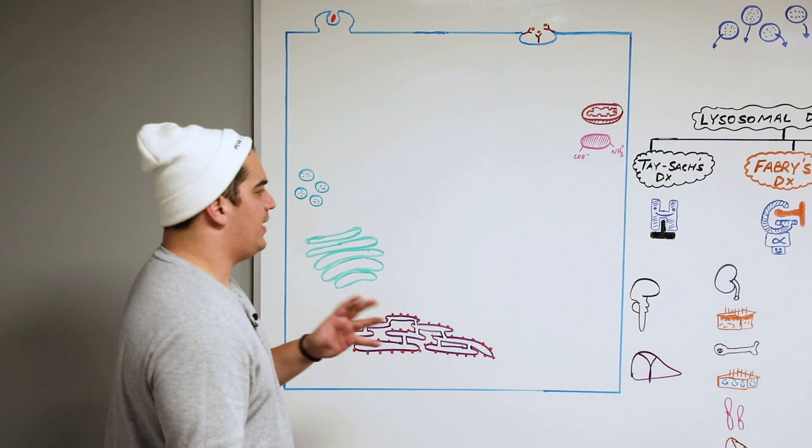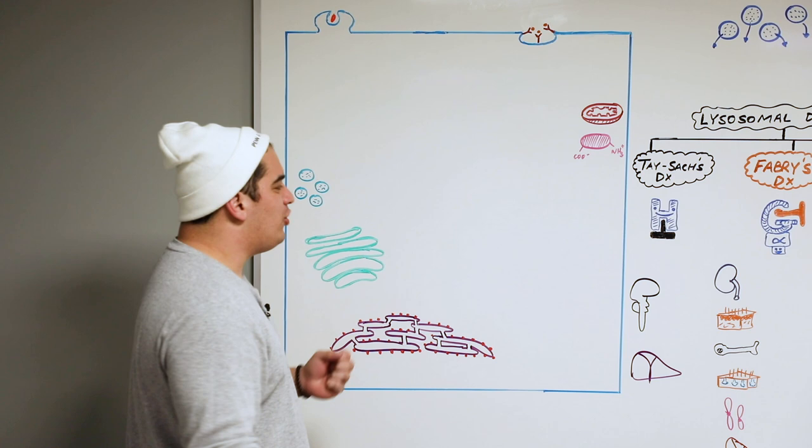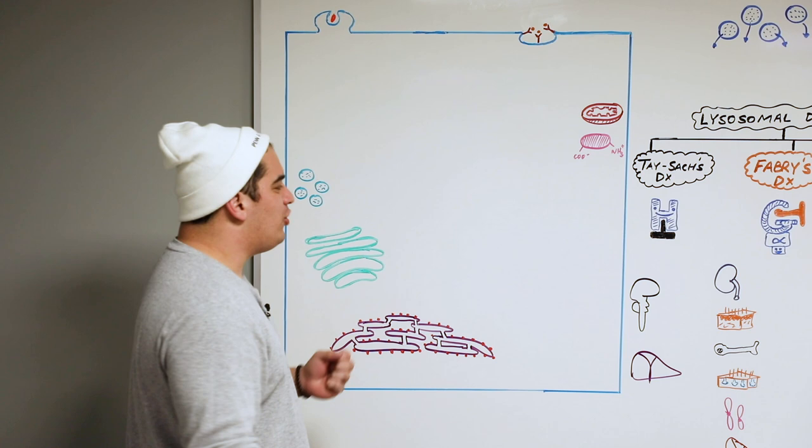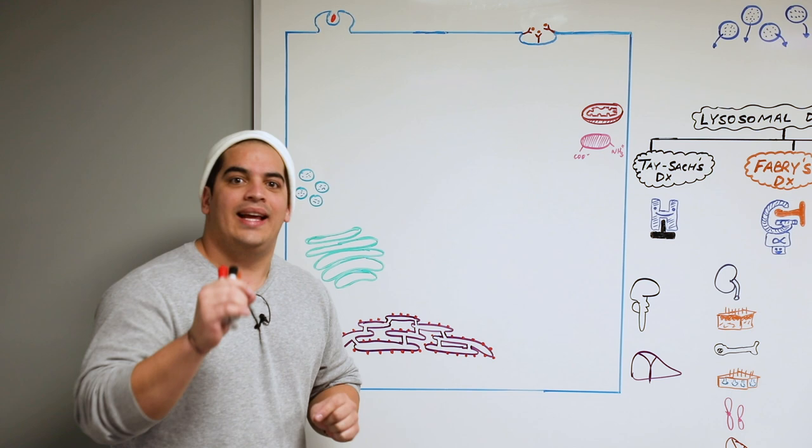When we talk about lysosomes, we talked a little bit about their overall design, their structure, and their basic function in the video on the structure and function of the cell. But we need to dig in a little bit deeper into the lysosomes. If we understand the function of lysosomes in greater detail, it's much easier to understand the lysosomal storage disorders. So let's start off talking about how lysosomes work.